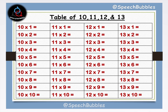First of all we will see the table of 10. 10 1s are 10, 10 2s are 20, 10 3s are 30, 10 4s are 40, 10 5s are 50.